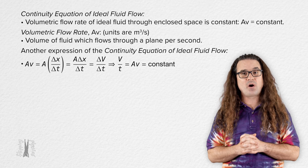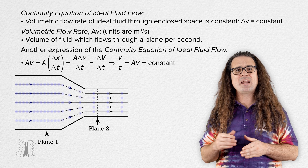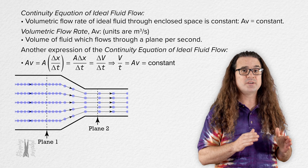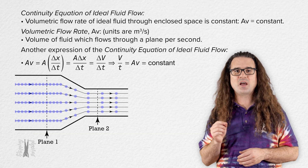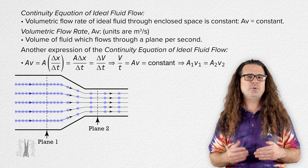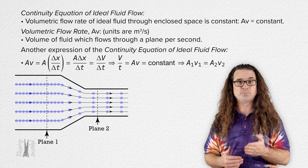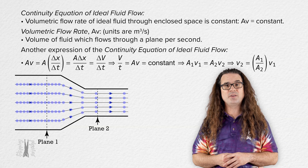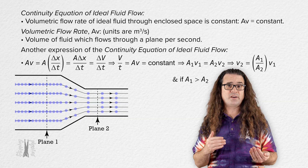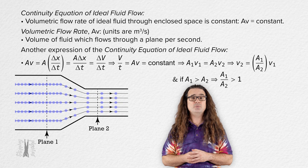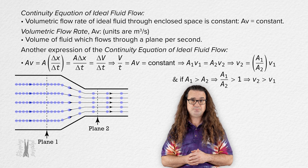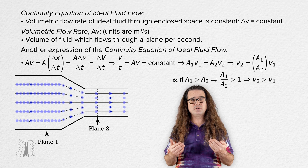Going back to our example of ideal fluid flow through a circular pipe which decreases in diameter — when highly idealized fluid particles are added to the illustration, notice what happens to the velocity as the fluid moves from plane 1 to plane 2. As the diameter narrows, conservation of volumetric flow rate means the cross-sectional area decreases, so the velocity must increase. Mathematically, v₂ = (A₁ / A₂) × v₁. Since A₁ > A₂, the ratio is greater than 1, so v₂ > v₁.